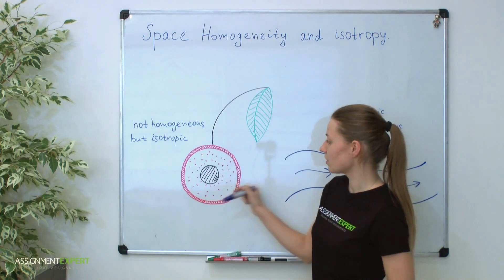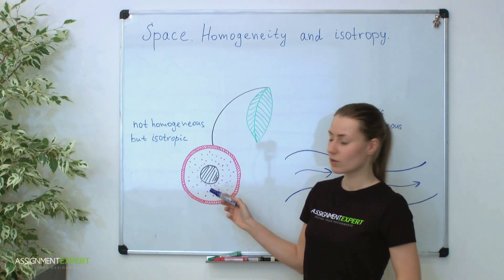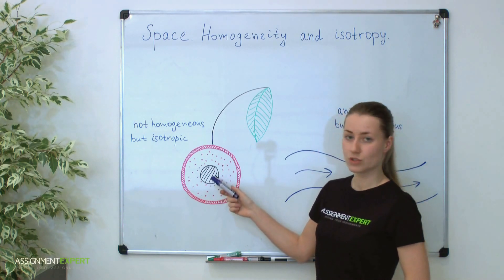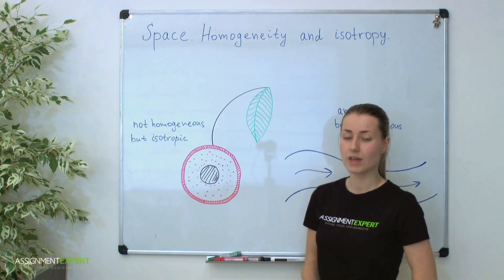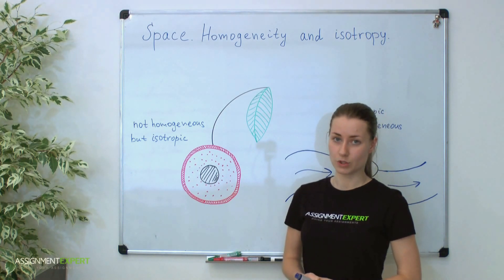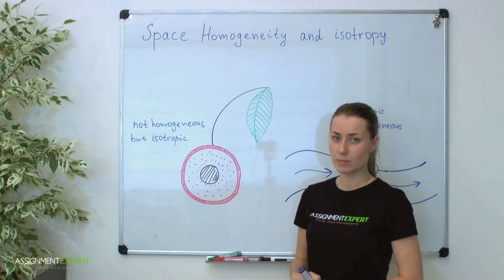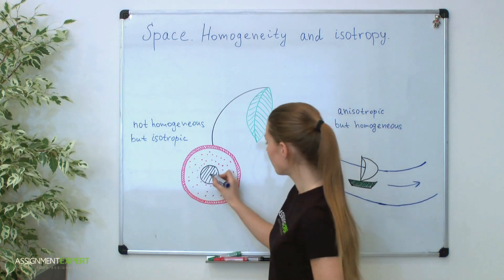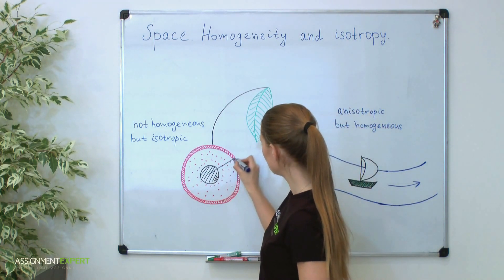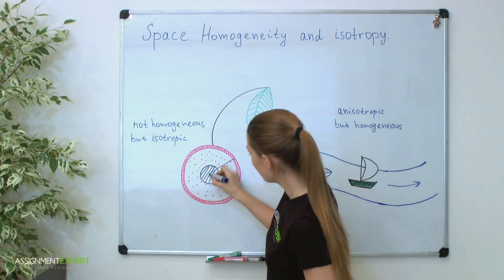You see that a cherry as a whole is not homogeneous because every layer has its own structure, density and other properties. In spite of it, a cherry is an isotropic object. Let's verify this statement and consider the radial structure of a cherry. You can plot a line from the center of a cherry to its peel and see that every time this line crosses the same layers of a cherry.